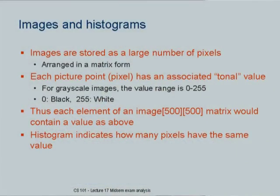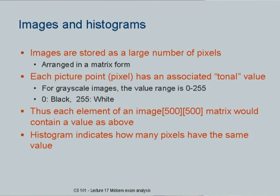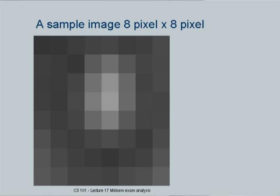The actual problem was: given an array of a digital image, calculate the histogram. I showed them that the histogram is in the range of 0 to 255, for example, and for a black and white image you will have various values. I gave them an example of an 8 pixel by 8 pixel image. Incidentally, all the images are from Wikipedia.